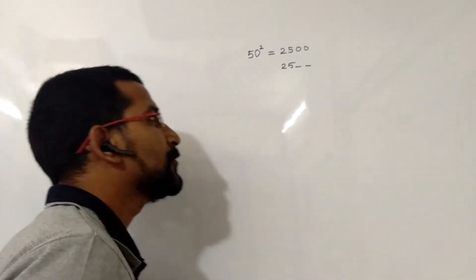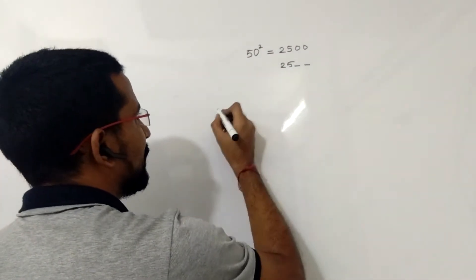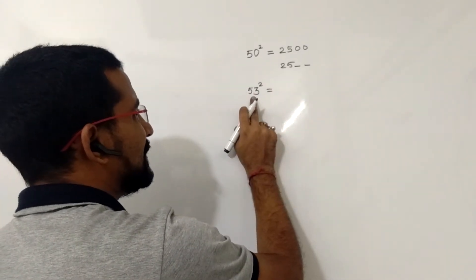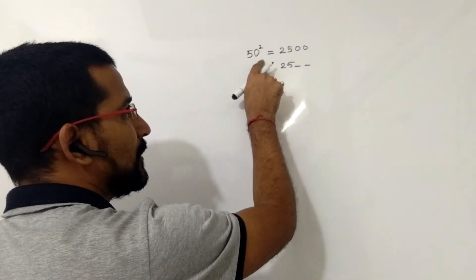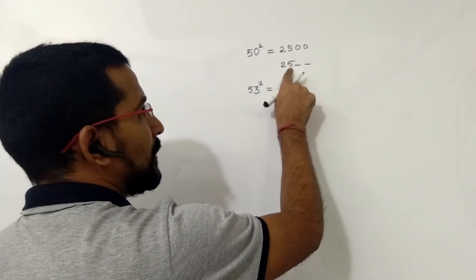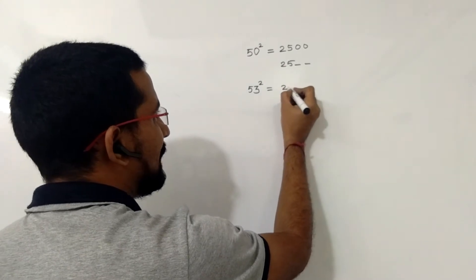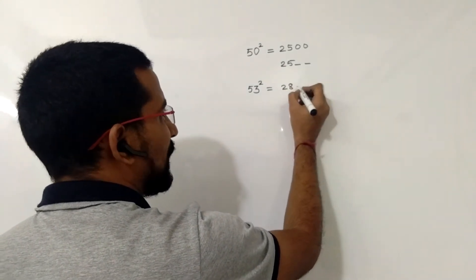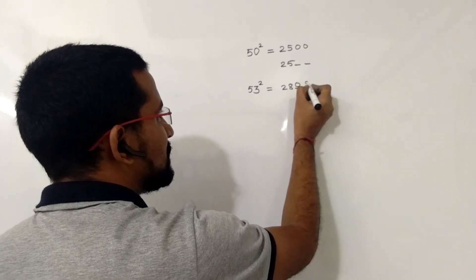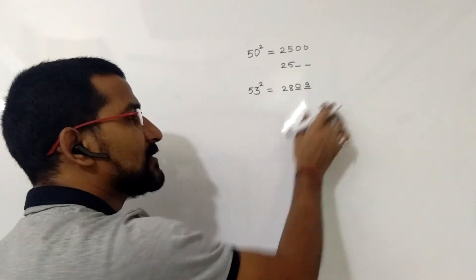For example, if you want to find the square of 53: 53 is 3 more than 50, so I will add 3 to 25. That gives 28. The square of 3 is 9, so the last two spaces are filled by 09. The square of 53 is 2809.